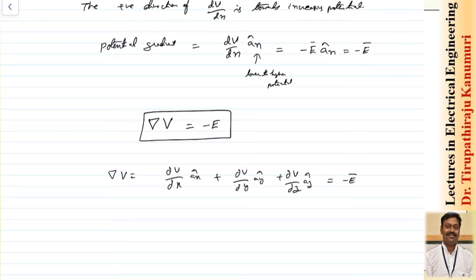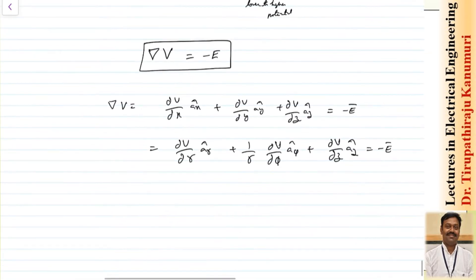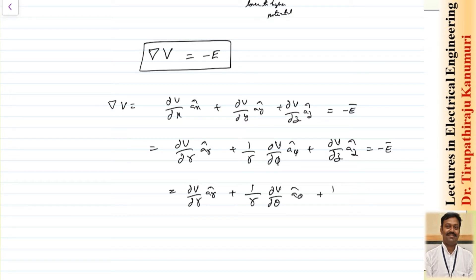In the cylindrical coordinate system, grad V equals ∂V/∂r in the direction of A_r, plus (1/r)·∂V/∂φ in the direction of A_φ, plus ∂V/∂z in the direction of A_z, and this equals minus E. In the spherical coordinate system, grad V equals ∂V/∂r in the direction of A_r, plus (1/r)·∂V/∂θ in the direction of A_θ, plus (1/(r sinθ))·∂V/∂φ in the direction of A_φ, and this also equals minus E.